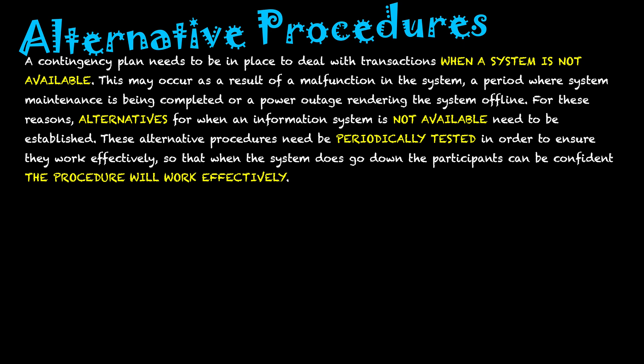These alternative procedures need to be periodically tested in order to ensure that they work effectively, so that when — or if — the system goes down, participants can be confident that the procedure will work effectively. We need to train in it and understand what it is. Our staff need to be familiar with it so that if the scenario happens, we're ready to go.